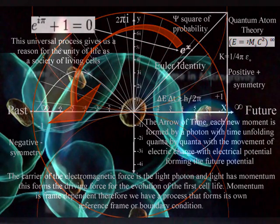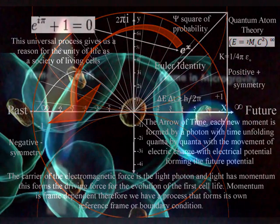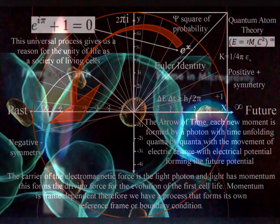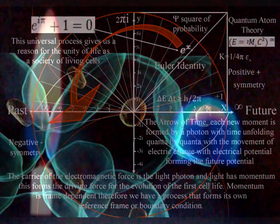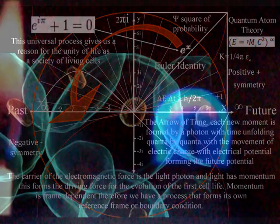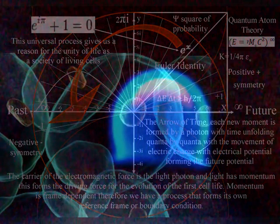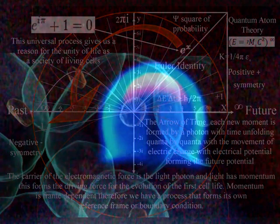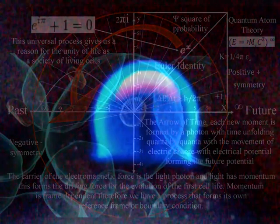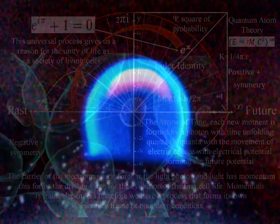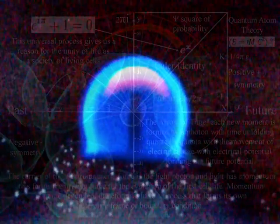A candle flame in almost zero gravity even takes on the spherical geometry and characteristics of a living cell, as can be seen from these images from the International Space Station. In almost zero gravity, a candle flame forms a sphere that is interacting with the atmosphere on the two-dimensional surface of the sphere.